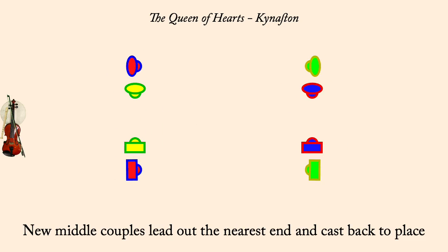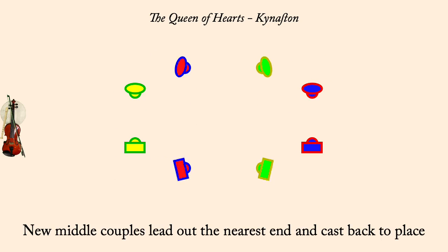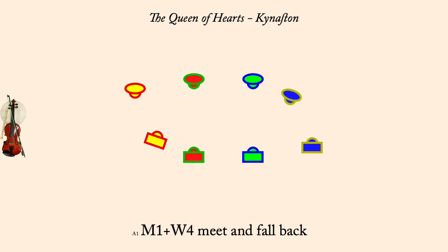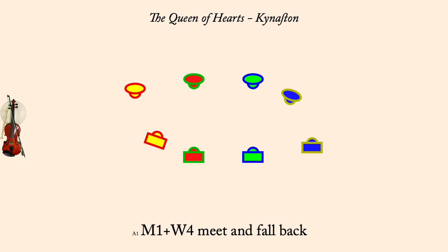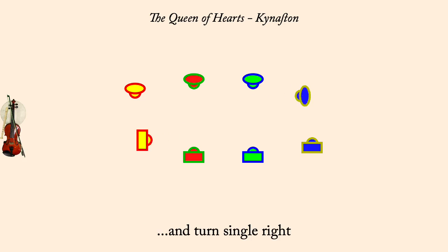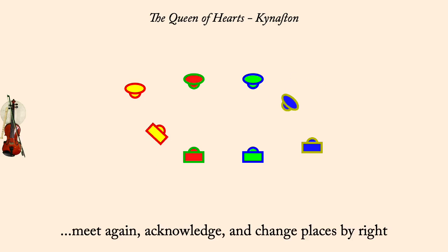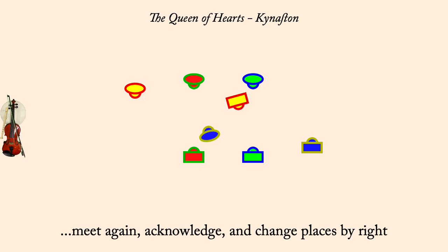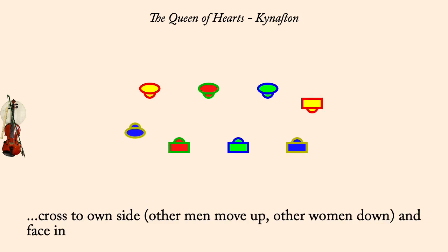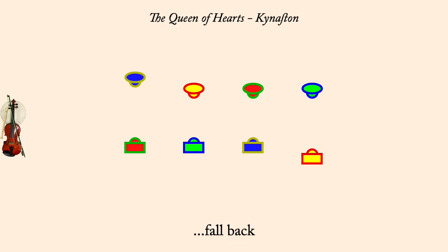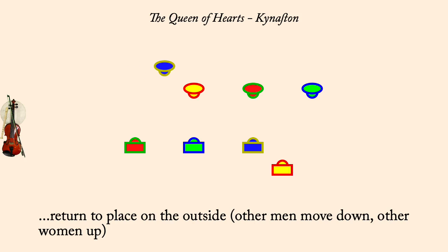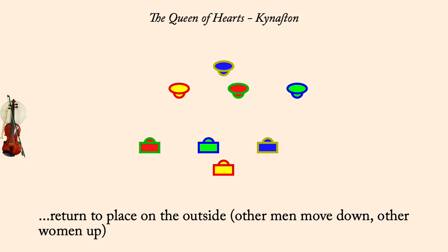Man one, woman four: meet and fall back. And turn single right. Meet again and change by right. Cross to own side, others make room. Fall back. Return to place, others make room.